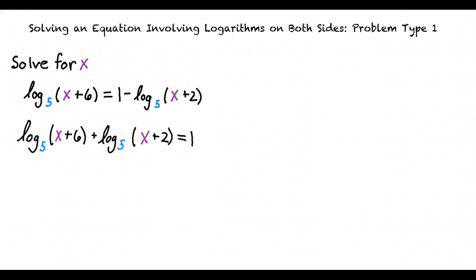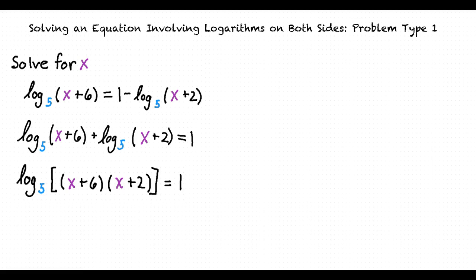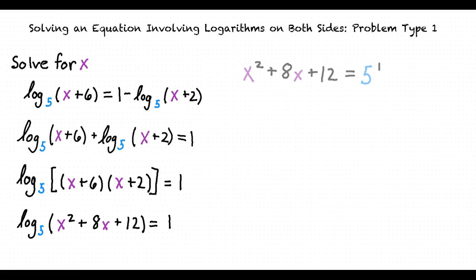The logarithm product rule allows us to rewrite these two logarithms as the base 5 logarithm of the product of the two expressions. We now want to multiply the binomials inside the logarithm together, then rewrite our logarithmic equation in exponential form so that we can solve for x.